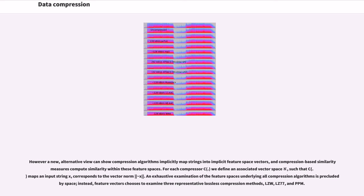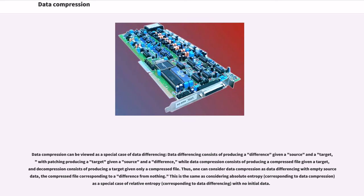Data compression can be viewed as a special case of data differencing. Data differencing consists of producing a difference given a source and a target, with patching producing a target given a source and a difference, while data compression consists of producing a compressed file given a target, and decompression consists of producing a target given only a compressed file. Thus, one can consider data compression as data differencing with empty source data, the compressed file corresponding to a difference from nothing. This is the same as considering absolute entropy, corresponding to data compression as a special case of relative entropy, corresponding to data differencing, with no initial data.